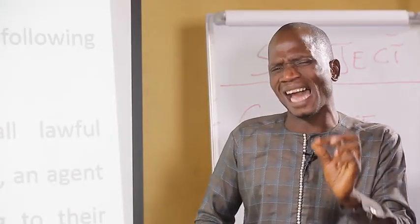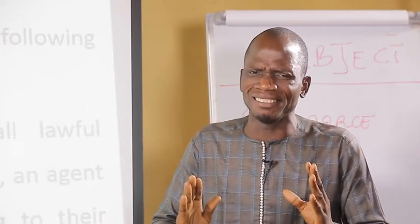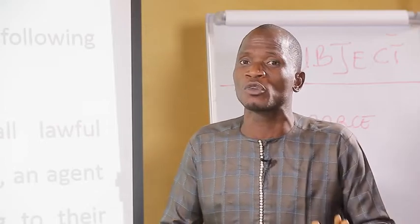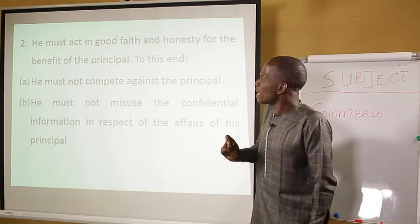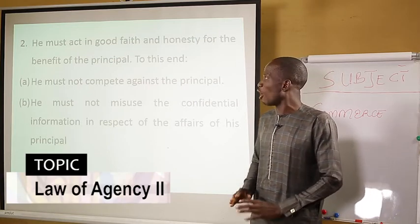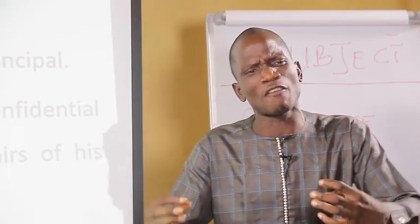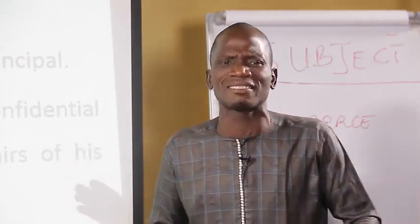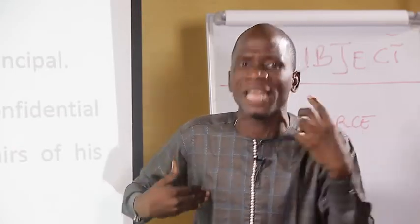One of the tasks an agent must do to his principal is to obey all lawful instructions by the principal. An agent must perform his work according to the terms of agreement. You are being employed to work on behalf of someone, therefore you must obey the instructions given to you by your principal. Two, he must act in good faith and honesty for the benefit of the principal. An agent must be honest, just like in the case of a universal agent that has unlimited or unrestricted power given to him by his principal. A universal agent is expected to act in good faith and always be honest to his principal.